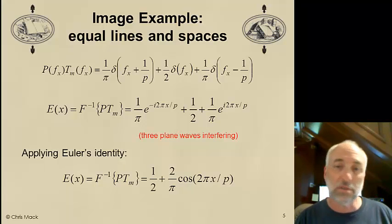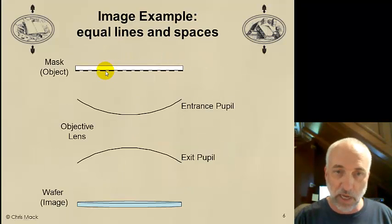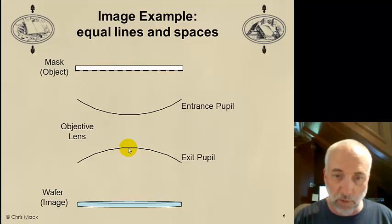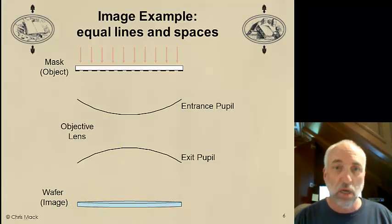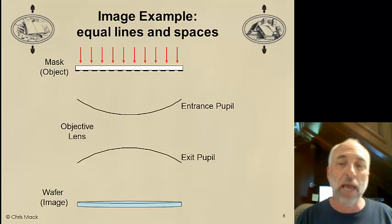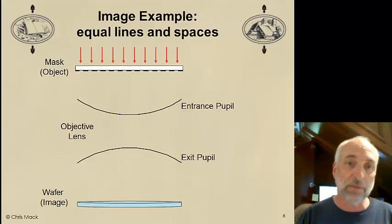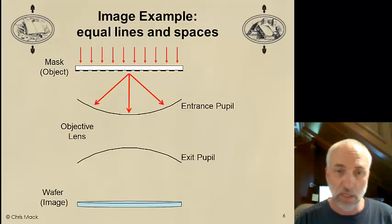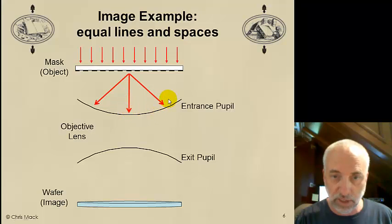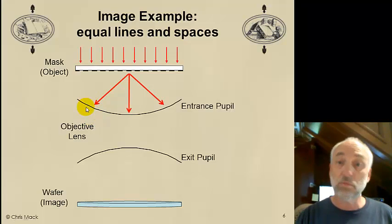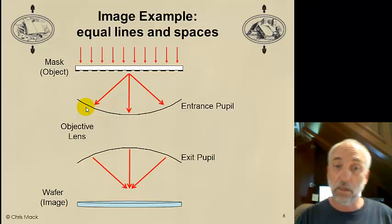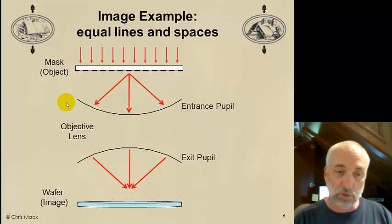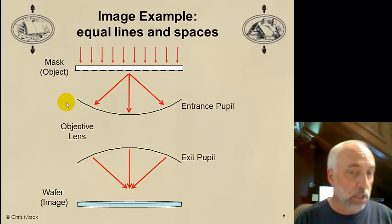I would like an image on the wafer that looks like the mask pattern. The mask has a period of p, the image has a period of p. Let's look at this result graphically. I've got a mask up here with my lines and spaces of period p, an objective lens that has an entrance pupil and an exit pupil, and then a wafer where my image is going to be produced. I shine normally incident light on the mask. We will talk about other ways of illuminating the mask soon.